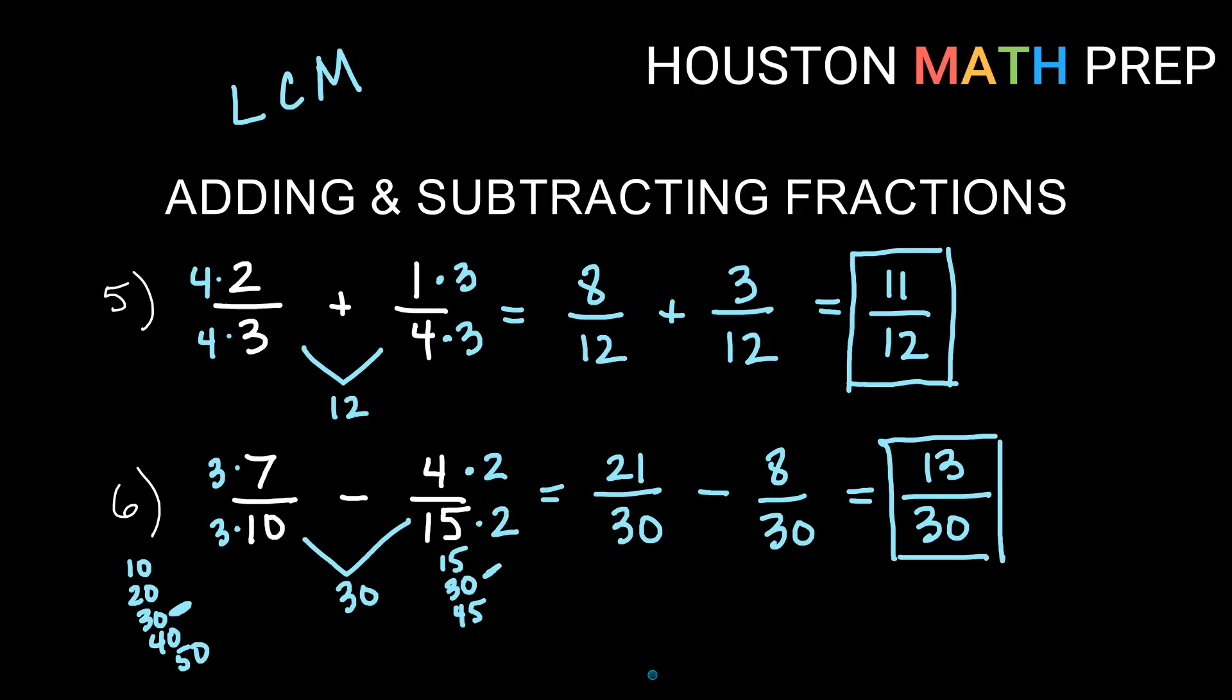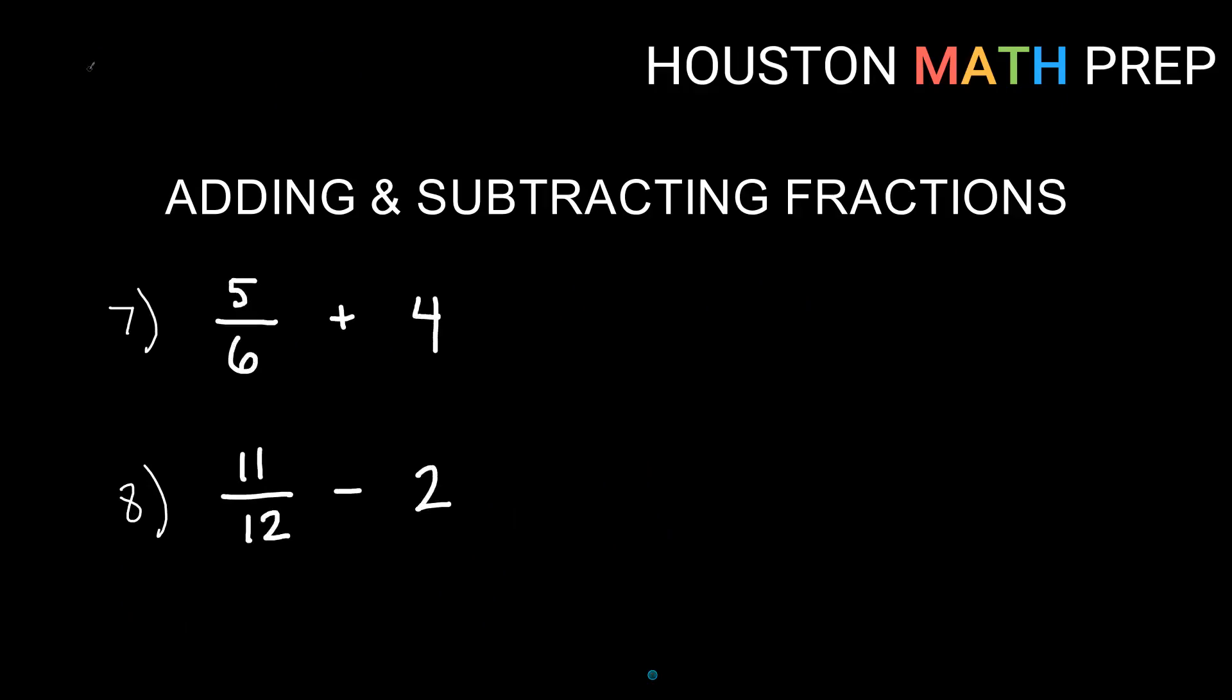Moving on to something that might get people when they see it. I have a fraction and a whole number. What do I do? Some of you out there probably know, but let's make sure everybody knows. We need to think of this 5 over 6 plus 4. We want to think of this 4 as a fraction. And how we think of whole numbers as fractions is to write them over 1. In other words, 4 over 1 is the same as 4. That's because fractions are division. So 4 divided by 1 would be 4. That's how we know 4 over 1 is the same as 4.